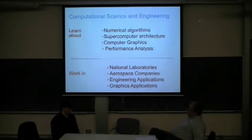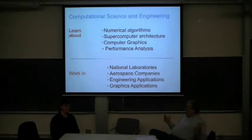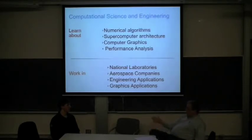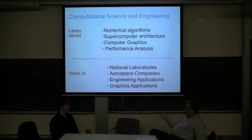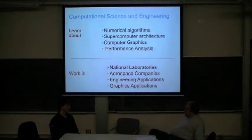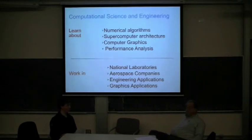What kind of jobs could someone who does this track expect to get in industry? The jobs are primarily in science and engineering. For example, high-tech companies — a lot of our people work at places like Ball Aerospace, Lockheed Martin, the National Laboratories, NCAR here in Boulder, San Diego Laboratories — these are laboratories working on the frontiers of science. Also, the oil companies all use a lot of scientific computing.